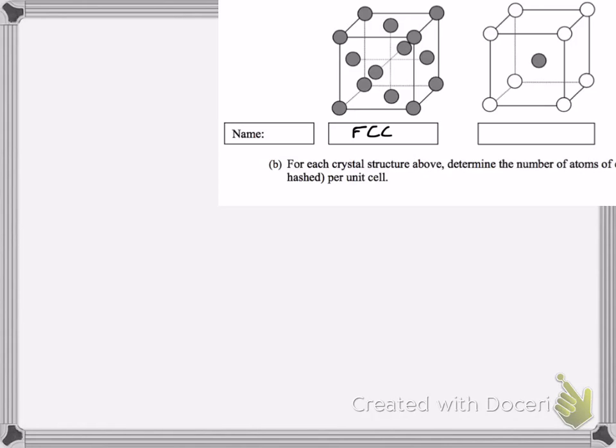What's the one on the right? That is a body-centered cubic. You have your simple cubic outline, and then you have one atom in the center there.